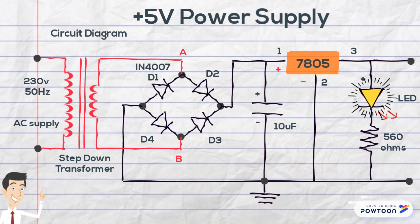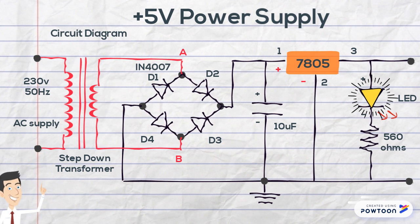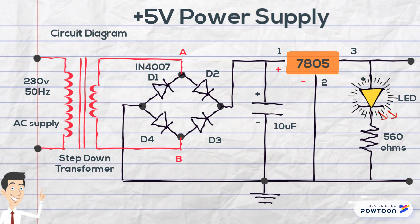In order to remove these AC ripples, we are making use of a capacitor filter of 10 microfarads connected between pin number 1 and 2 of the regulator IC. After this phase, the output can be observed from pin number 3 and 2 of the regulator IC.